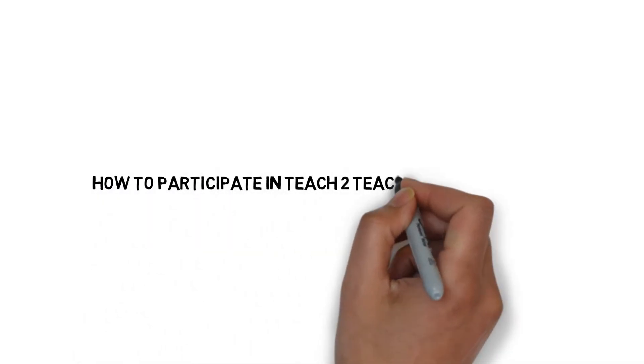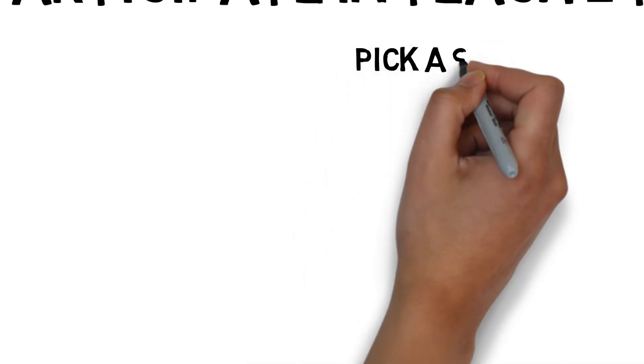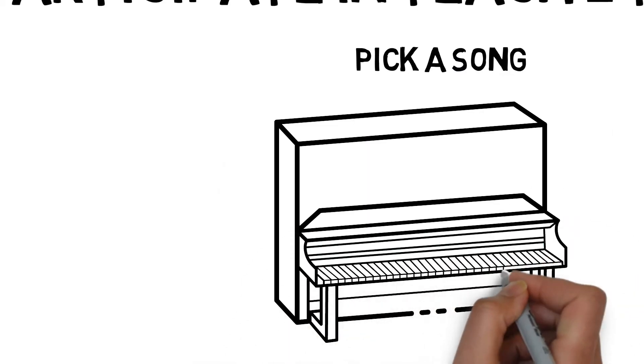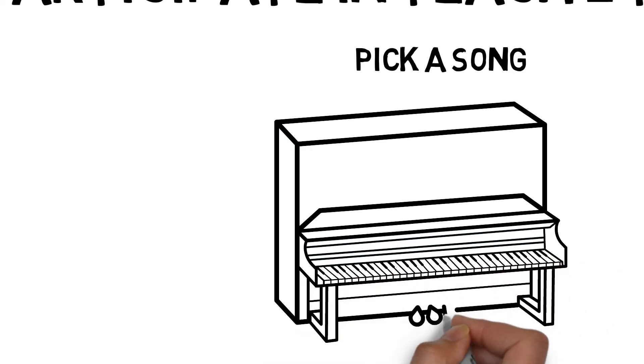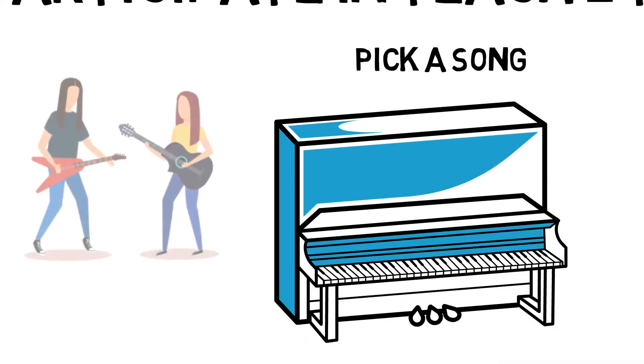How to participate in the Teach to Teach digital recitals. The first step during recital season is to pick a song to start getting ready for performance. It's a good idea to choose a song that shows off something you've been working on and one that can be ready to perform by the video due date. Ask your teacher to help choose which piece you'd like to perform.